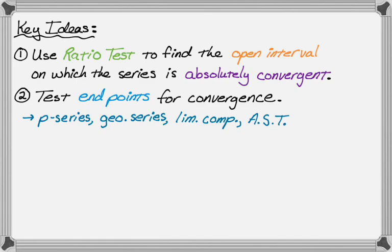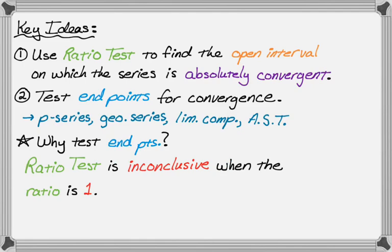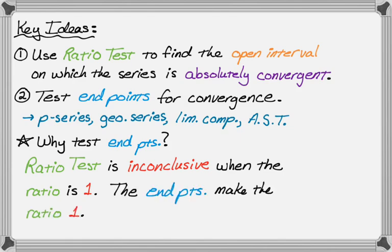You might be wondering why we have to test the endpoints. We test the endpoints mainly because the ratio test is inconclusive when the ratio is equal to 1. It turns out that the endpoints are always going to make the ratio equal 1, so it's always going to be inconclusive there and we just have to test them with some other test. So let's take a look at an example.